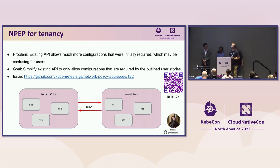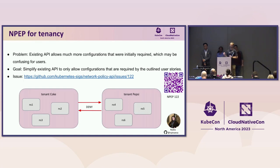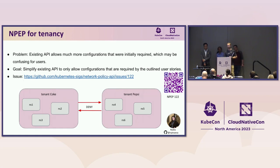From Nadia again, doing a ton of work on the new NPEP for tenancy. When we wrote the KEP for Admin Network Policy, we had built in the desire to support certain tenancy-related use cases. But when we got around to implementing v1alpha1 of that API — to be honest, it had been a year of KEP work and we ended up with a design we didn't really love. So this is the best part about our NPEP process: we now have a new enhancement proposal to make that design better. The original API allowed way more expressiveness than was needed, so we're locking it down and making it more explicit, with the ultimate goal of making it easier to read for users.